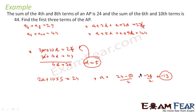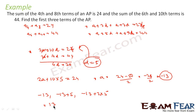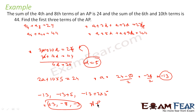We can now find the AP. The first three terms are: a is minus 13, a plus d is minus 13 plus 5 equals minus 8, and a plus 2d is minus 13 plus 10 equals minus 3. So the first three terms are minus 13, minus 8, minus 3. Very simple.